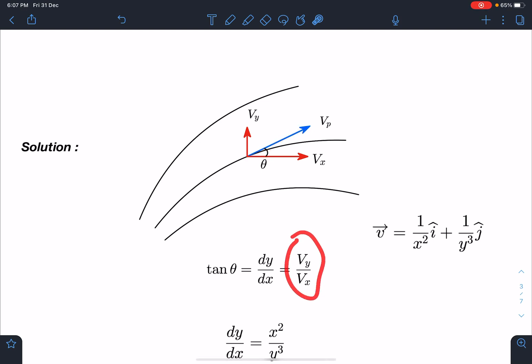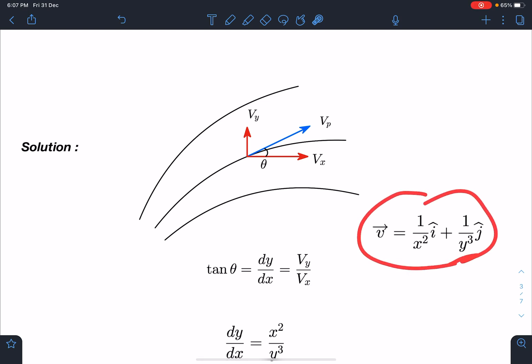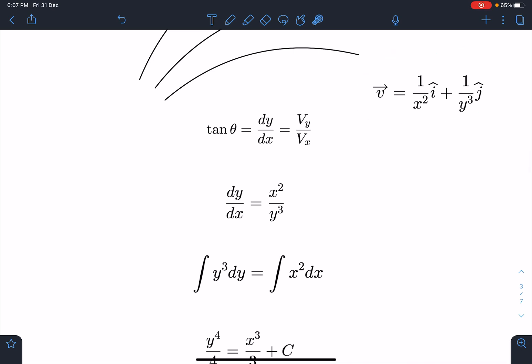And it is also the slope of the tangent here, so I can write dy/dx. From this velocity profile, all you need is just to substitute the values here and separate the variables. Then we are going to get this.